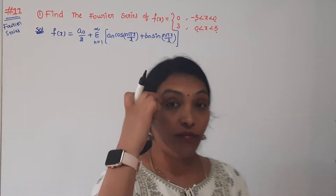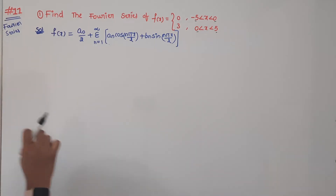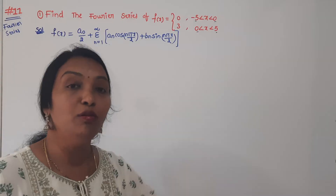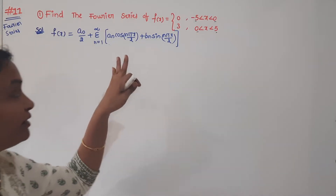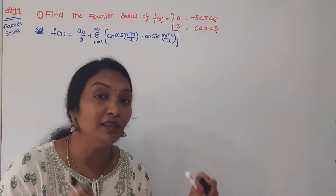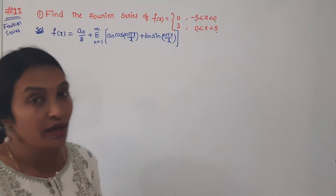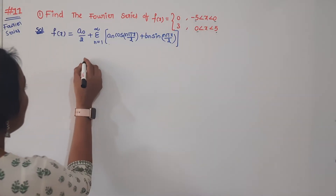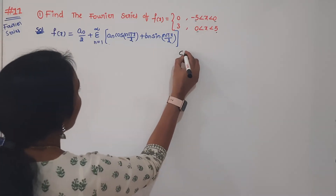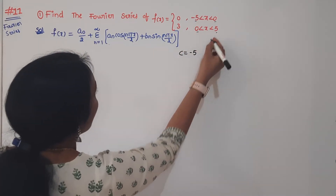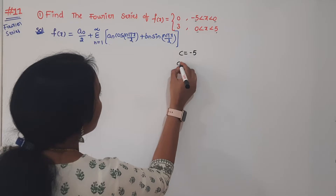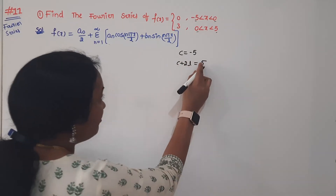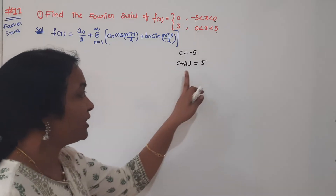Change of interval. Here we substitute the function into A₀, Aₙ, Bₙ. First, find the L value — this is very simple. Let's see: C is equal to minus 5. C plus 2L equals 5, so L equals 5. I will substitute C as minus 5 and C plus 2L as 5.